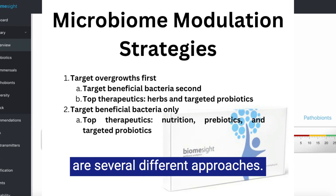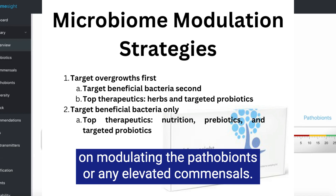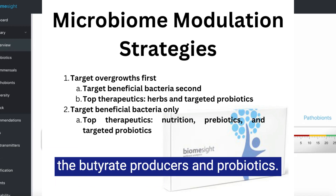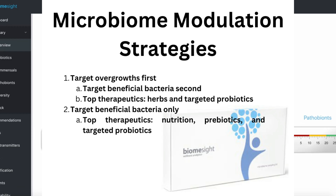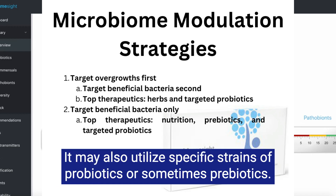Once you have a general assessment of your microbiome, there are several different approaches. The first approach is to target the overgrowth first — focus on modulating the pathobionts or any elevated commensals. After those are lower, you would then focus on supporting your beneficial bacteria, the butyrate producers and probiotics. This approach utilizes antimicrobial therapies such as specific herbs, and may also utilize specific strains of probiotics or sometimes prebiotics.